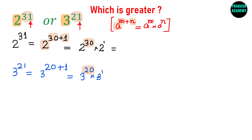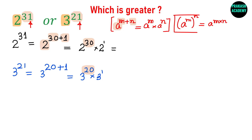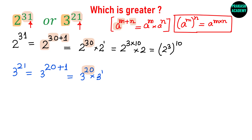So we need to do further simplification. I will use another rule of power: if you have a raised to the power m, all raised to the power n, this can be written as a raised to the power m times n. Now, 30 can be written as 3 times 10, so using this rule I can write 2 raised to the power 3, all raised to the power 10, multiplied by 2.